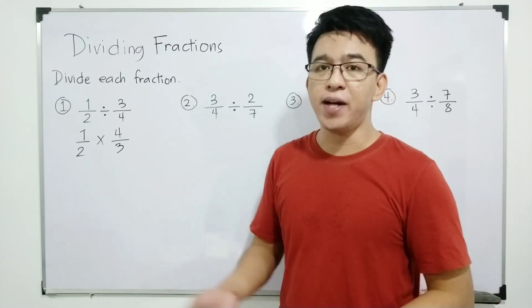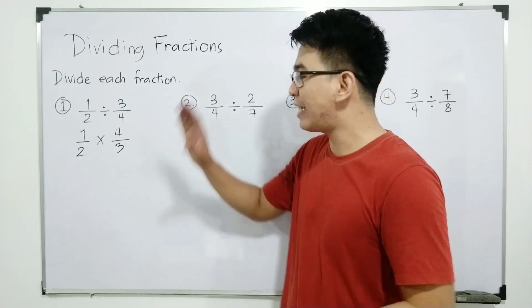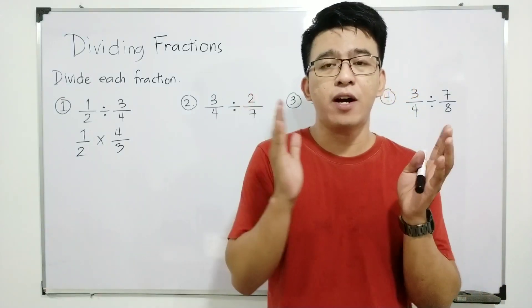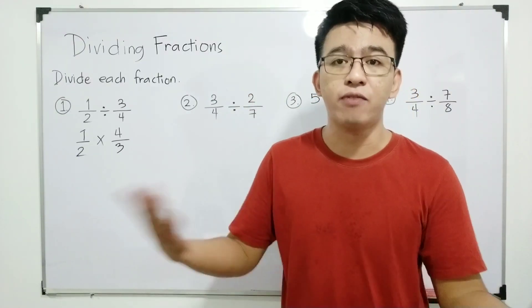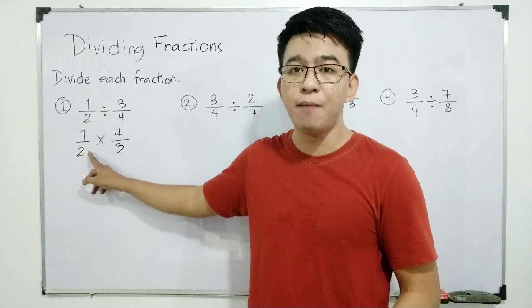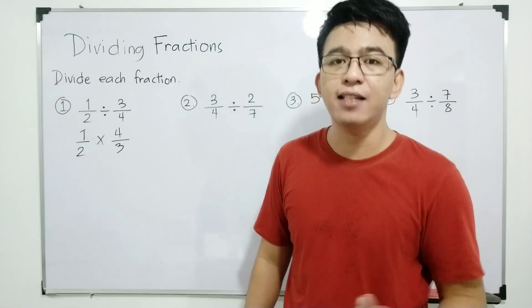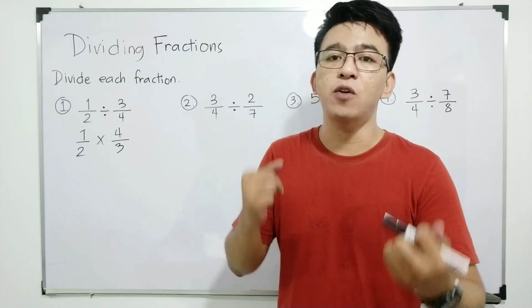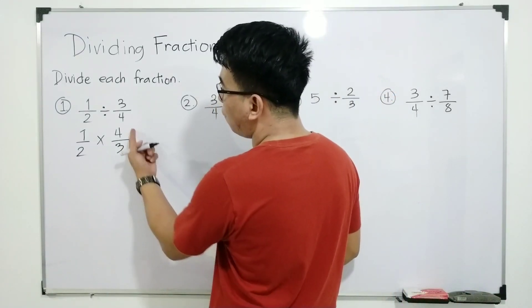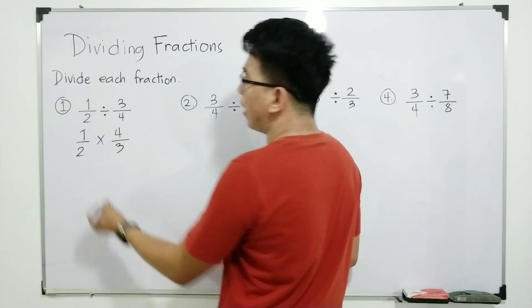A subscriber requested: can you do dividing fractions with cancellation? So I made this example. Normally when we are multiplying fractions we multiply numerator by numerator and denominator by denominator, but if you can simplify or do cancellation, do it so your product is smaller. So here we can cancel out four and two, because their greatest common factor is two — four becomes two.